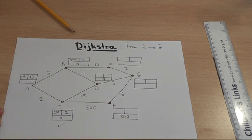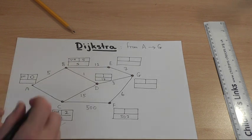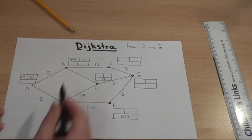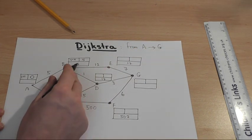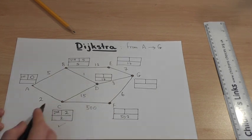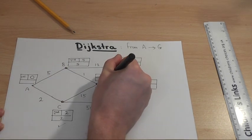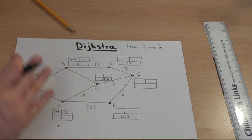And then look at what I can do from B. So once a node has been made permanent, look out at the options. 5 plus 12 is 17. 5 plus 1 is 6. Ah, the 6 beats the 17. There are no other options, then I pause.